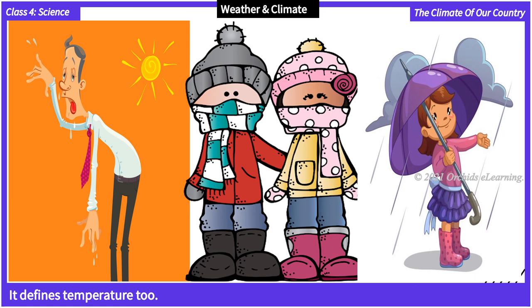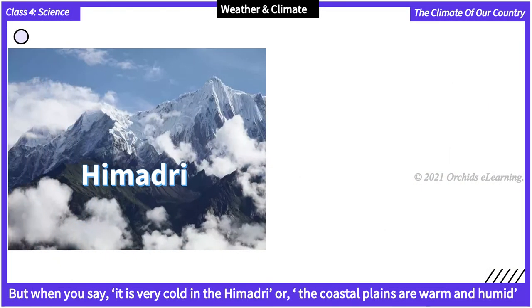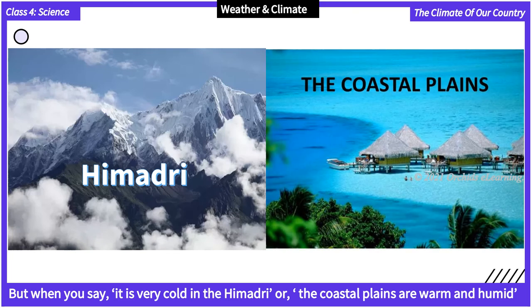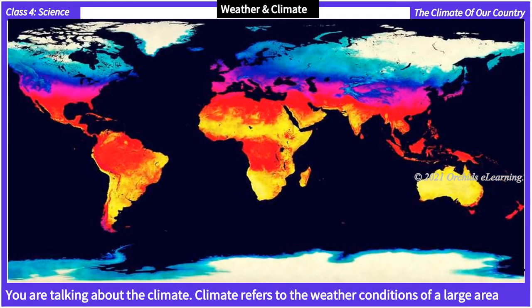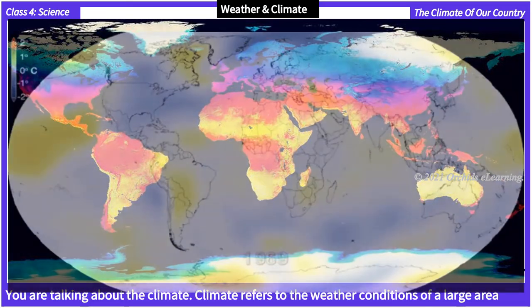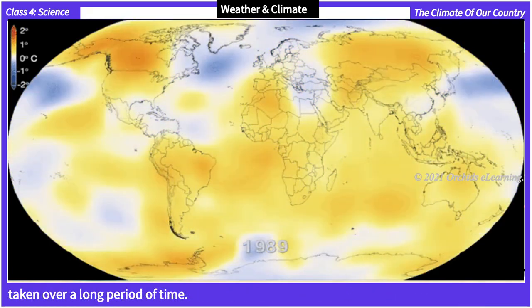Weather refers to how hot, cold, or rainy it is in a place at a particular time. It defines temperature. But when you say it is very cold in the Himadri or the coastal plains are warm and humid, you are talking about the climate. Climate refers to the weather conditions of a large area taken over a long period of time.